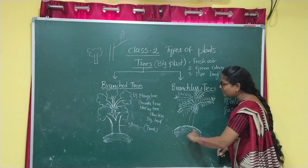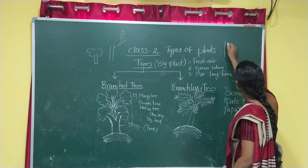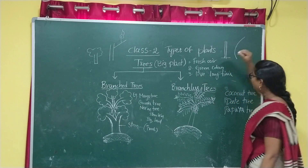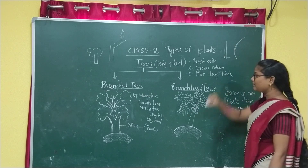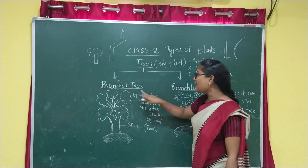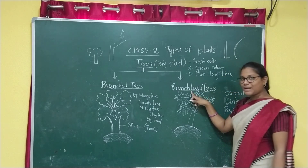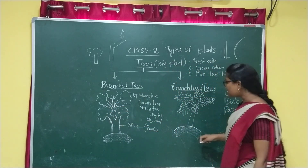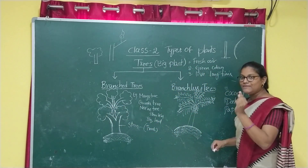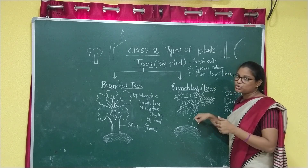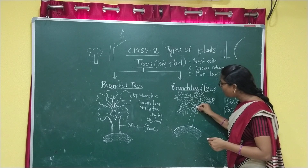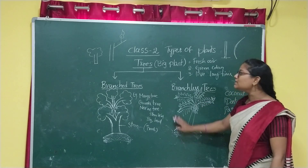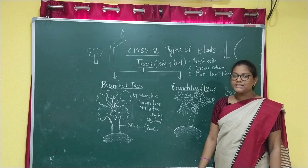These trees sometimes grow erect, in this shape. Trees are two types: one is a branched tree and another one is a branchless tree. Branched tree means one stem with branches. Branchless means they have only one stem — leaves are connected to the stem and fruits are produced at the top. This is known as a branchless tree.